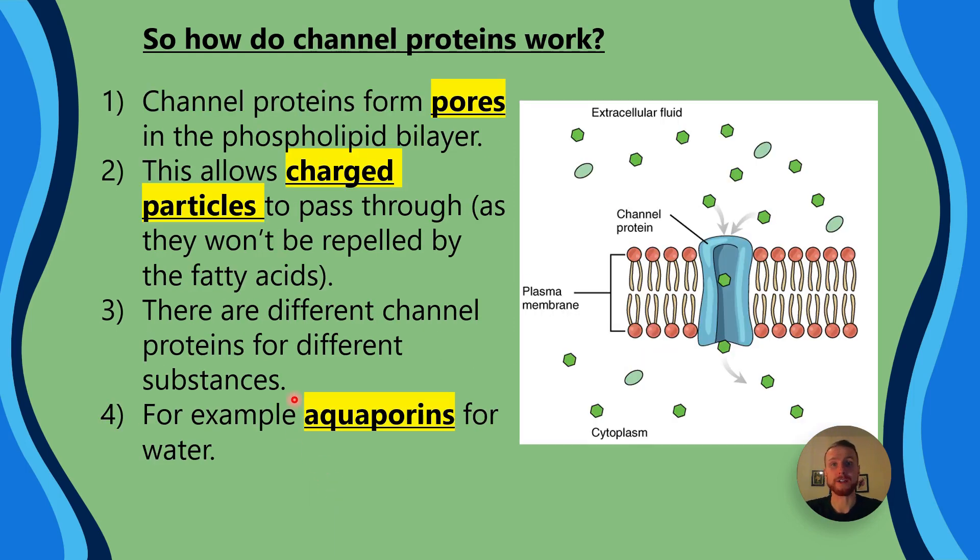Now, channel proteins, on the other hand, form pores that go directly through the phospholipid bilayer. Think about the pores in your face. That's where the term pore comes from. Think about porous rocks, meaning it's got holes within its structure. Now, this is going to allow charged particles to pass through because they'll be able to get around that repelling force of the fatty acids of the phospholipids. Now, remember, phospholipids have a phosphate head represented by the red circle you can see in this diagram, and that region is water-soluble. And the fatty acids or the fatty acid tails of the phospholipid are hydrophobic. That's why they're pointing into the middle because the fluid around the cell and the fluid within the cell is water-based. It's what we call aqueous, aqua meaning water.